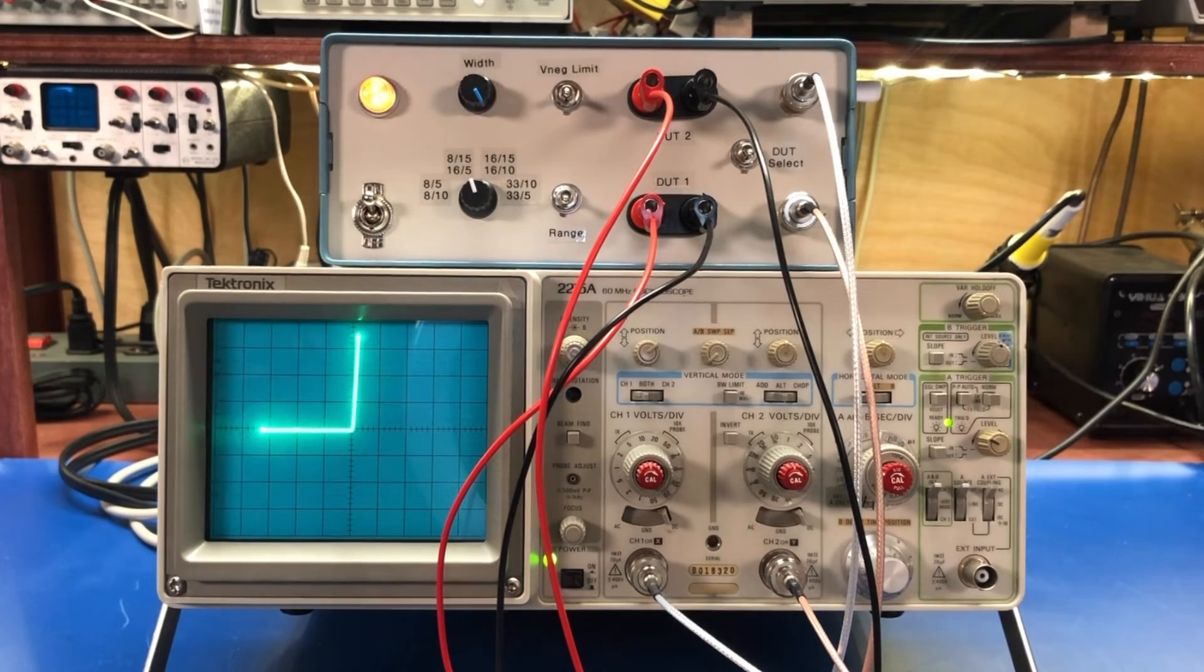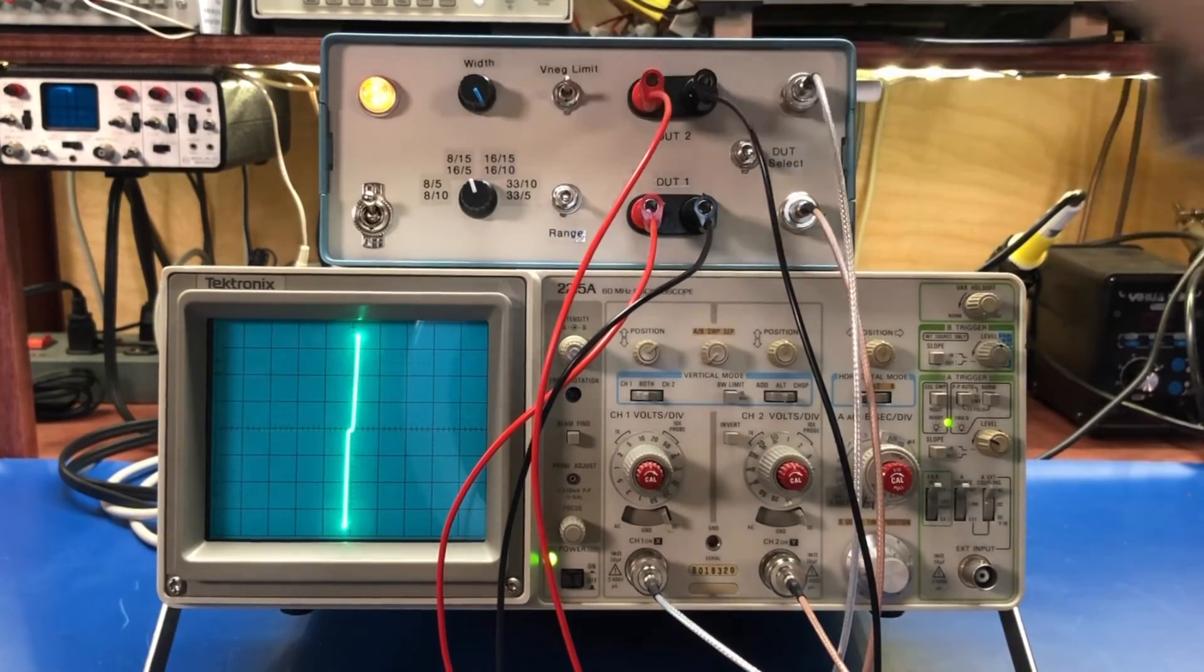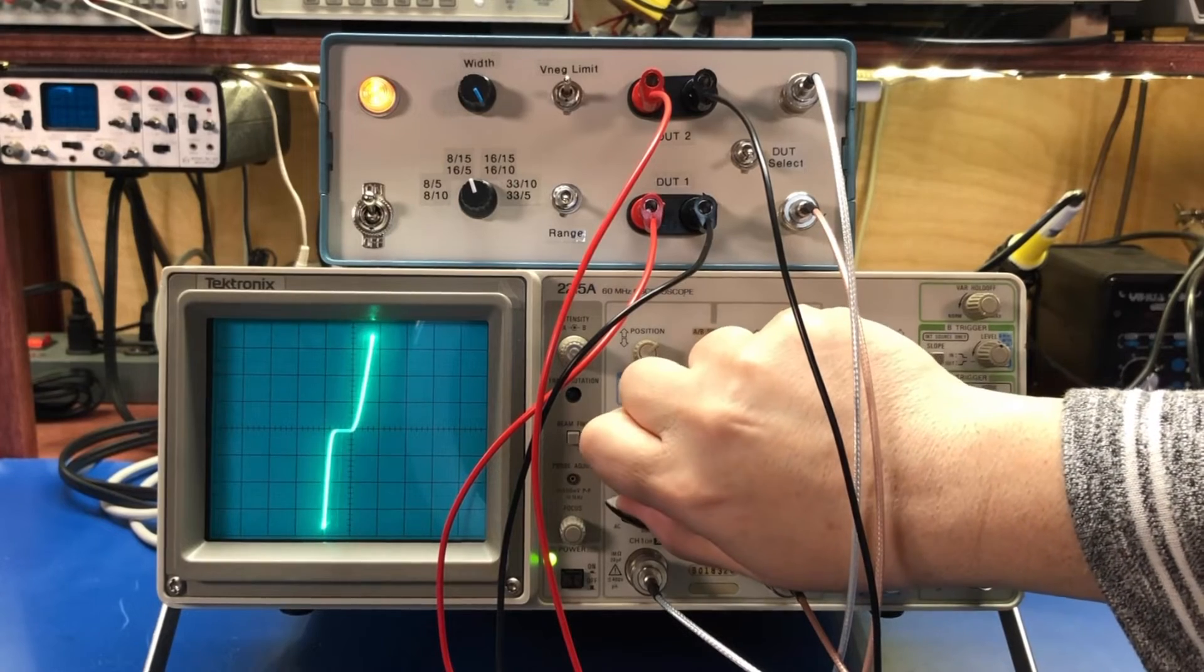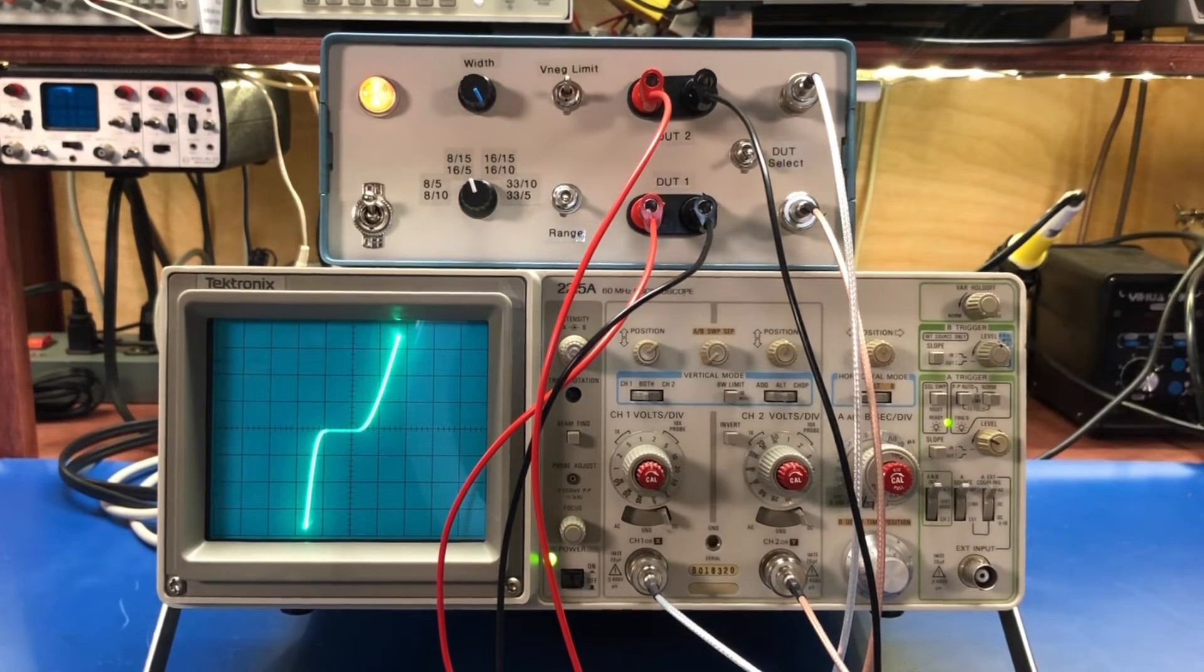And the negative voltage limit throws a diode across the device on the test terminal. So if I kick that in, you know, we can see what we would get.